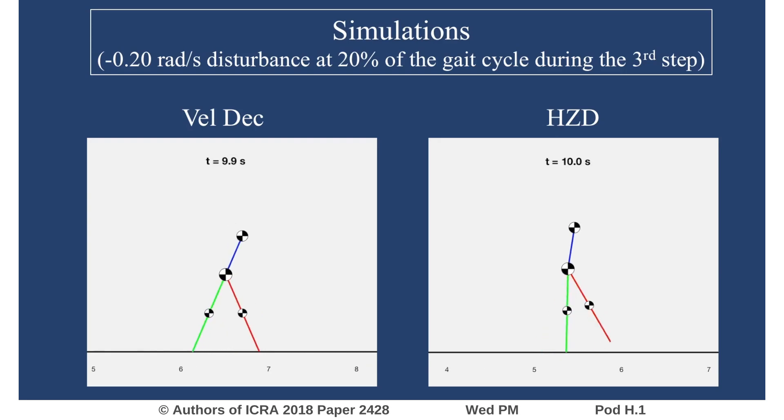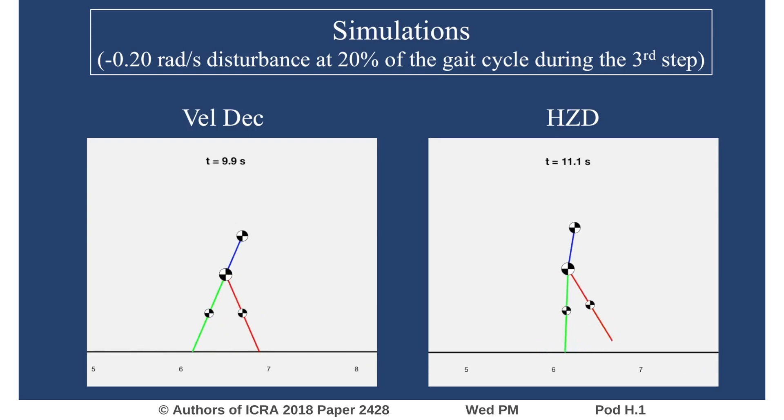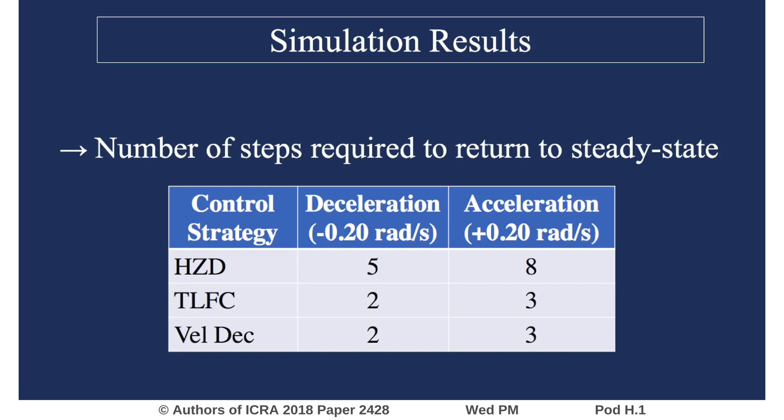In simulation, HCD required five steps to return to steady state following a deceleration disturbance, whereas transverse linearization and velocity decomposition only required two. These trends were also consistent in response to an acceleration disturbance.